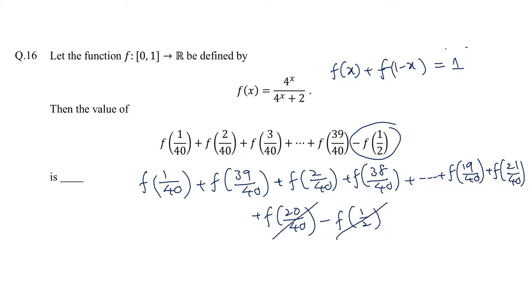As we know, f(x) + f(1-x) equals 1, so each group gives the answer 1. All these groups give answer 1. We have a total of 19 groups here, so the answer to this question is 19. Thank you.